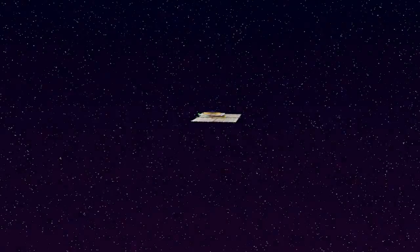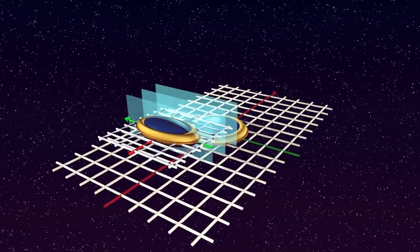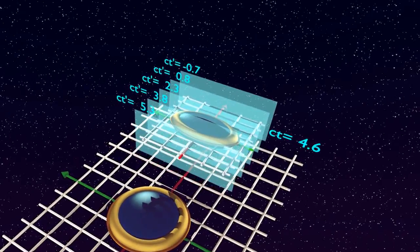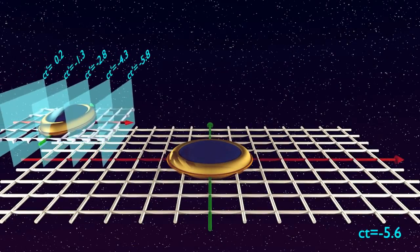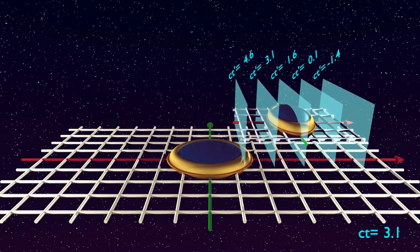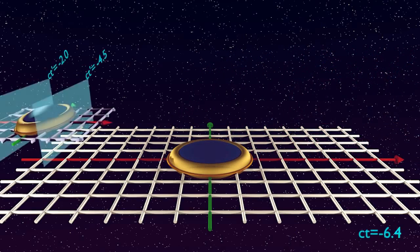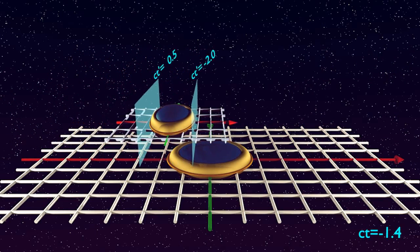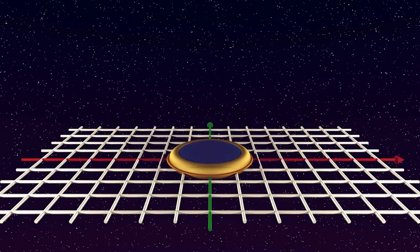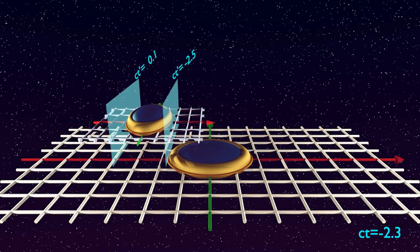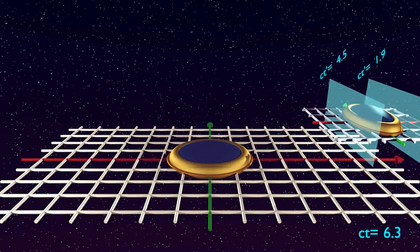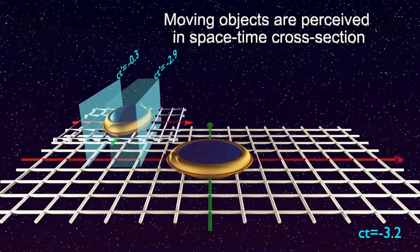As seen from the stationary frame, each plane of the moving frame that is perpendicular to the direction of motion is observed at a different proper time, flowing at a time-dilated rate. In fact, the rearmost point of the moving lab is always observed at a later instance of proper time than its foremost point. This means that at each instance of our time, we see moving objects not as instantaneous snapshots, but as veritable space-time cross-sections across a continuum of snapshots in their proper time.